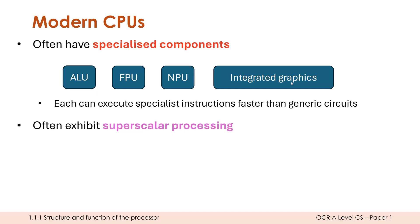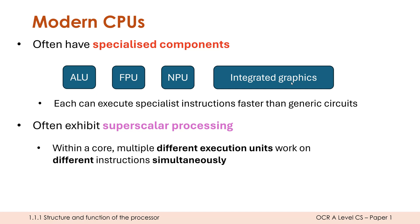Another nice term to drop into any answers is superscalar processing, because most CPUs nowadays use this. Even in the last 15 years some processors didn't use superscalar processing — for example, mobile phones. This is a little bit similar to pipelining where we have aspects of simultaneous execution within a single core. So even within one core, we are able to have multiple different execution units working on different instructions at the same time.